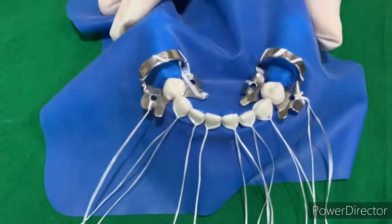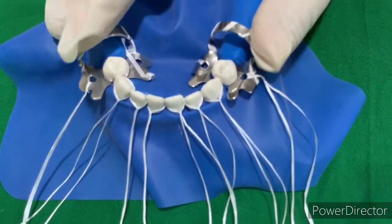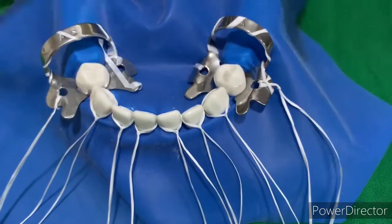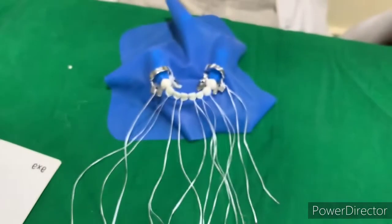This is how we made the floss tie. This is the anterior isolation of the teeth from canine to canine. Thank you.